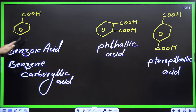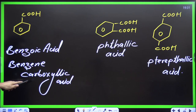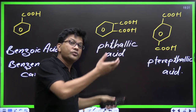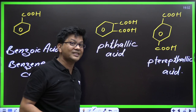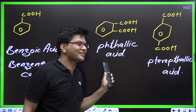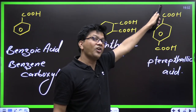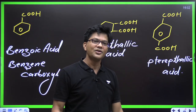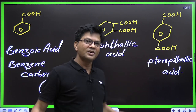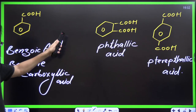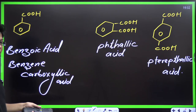This is benzoic acid, also called benzene carboxylic acid. When two COOH groups are at ortho positions (1,2) on benzene, it is benzene-1,2-dicarboxylic acid — called phthalic acid (the P is silent). When they are at 1,4 positions (para), it is terephthalic acid (again, P is silent). Remember: benzoic acid, phthalic acid, terephthalic acid.